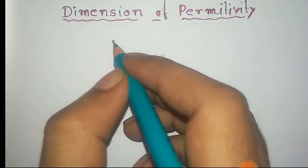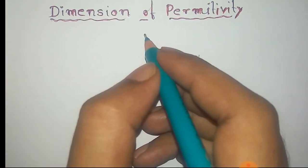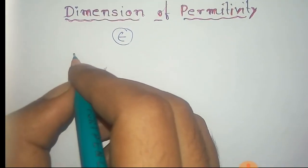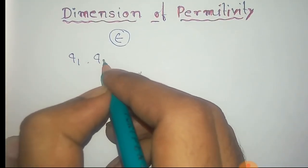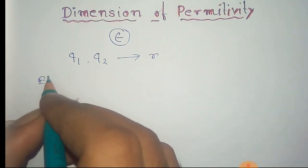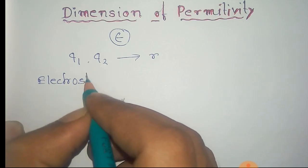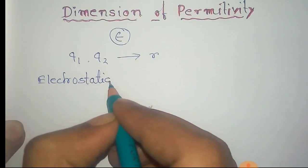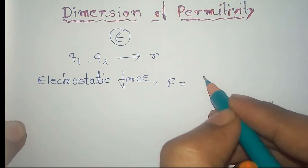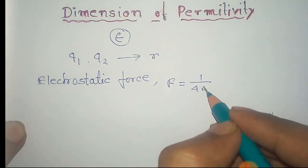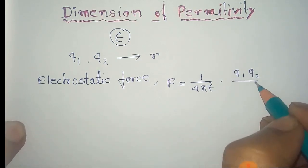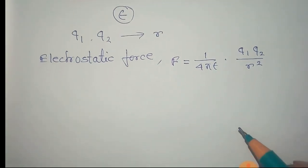In this video, we will find the dimension of permittivity. The permittivity of a medium is generally given by epsilon. We know that if there are two charges q1 and q2 at a distance r, then the electrostatic force or Coulomb force between these two charges would be f equal to 1 by 4 pi epsilon into q1 q2 by r square.